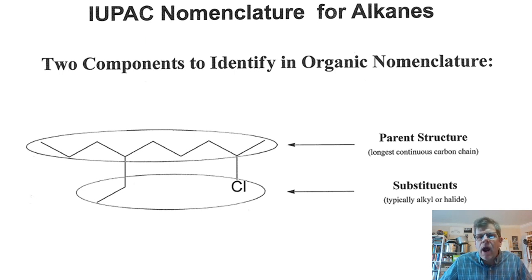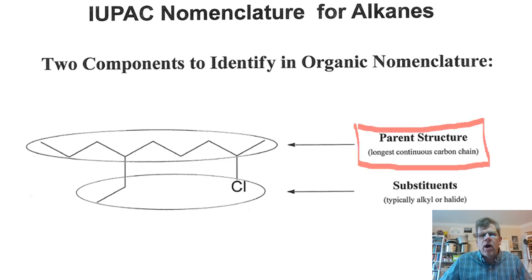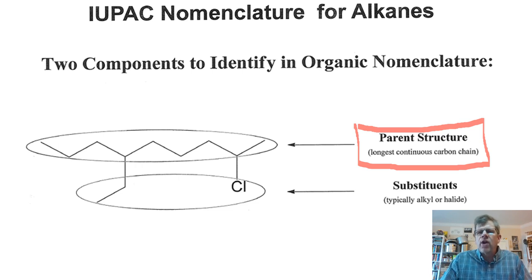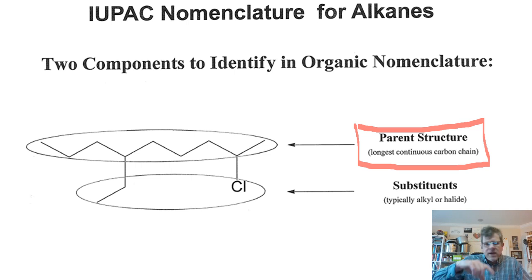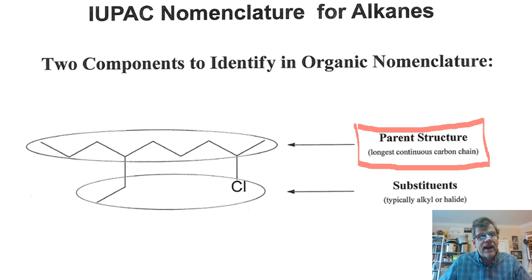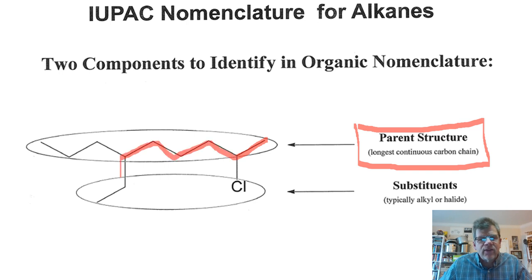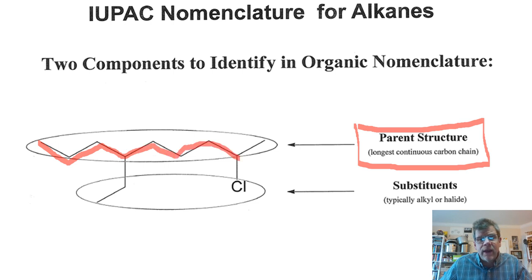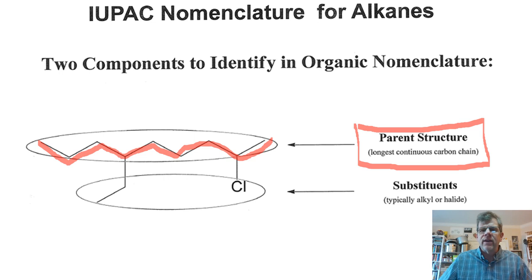The first thing to identify is the parent structure — and as we did in the previous example, the parent structure is the longest continuous carbon chain. We have to try all possibilities because the longest chain may meander. For example, counting along one path gives six carbons, another gives eight, and another gives nine — so nine is the parent structure. The longest continuous one wins; don't assume the horizontal chain as drawn is always the longest.